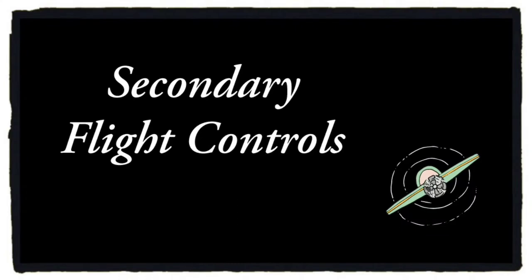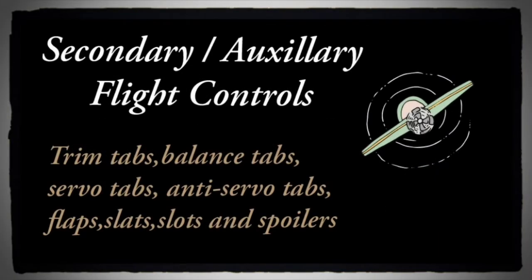Secondary flight controls are those which are not compulsory for an aircraft, but their presence increases the performance of primary controls. They are trim tabs, balance tabs, servo tabs, anti-servo tabs, flaps, slats, slots, and spoilers.